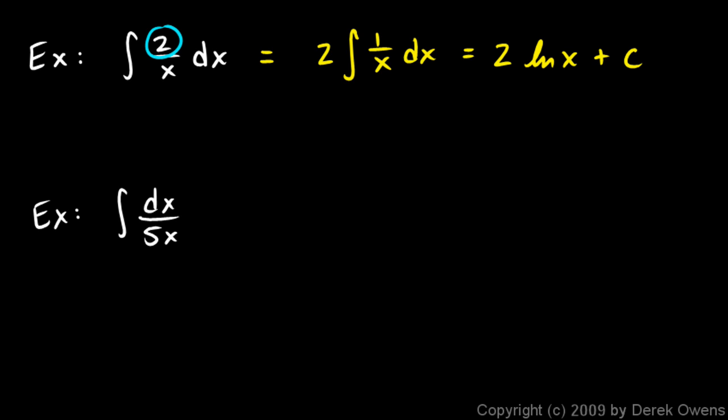We would just recognize that this constant multiplier can pop out front, leaving us with 1 over x in there. This next example is just like that. It's just arranged a little bit differently. We have a constant multiplier, which happens to be 1 fifth. You see the 5 in the denominator there. And then we still have our dx in the numerator, just like in the previous example, and the x in the denominator. So this example is really the same thing as saying 1 fifth times the integral of 1 over x dx. So it's 1 fifth natural log of x plus c.